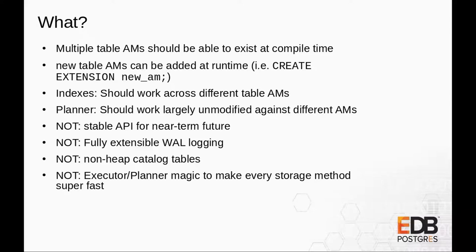It's also not tackling a bunch of problems we could have tackled as part of this work. Namely, we haven't made some other parts of Postgres extensible, even though it would be very nice. One notable limitation is that catalog tables are hard-coded to use the current heap — you can't create a catalog table on any of the new access methods.